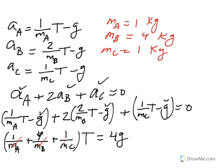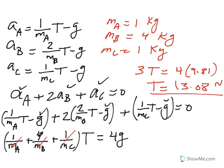So when you plug them in here, you end up getting three T equal four times. Now is the time to put the G in there, 9.81, and you can solve for T. And T comes out to be about 13.08 Newtons. And now all you have to do is to take this tension and plug them in here, here, and here, and get acceleration of A, B, and C.